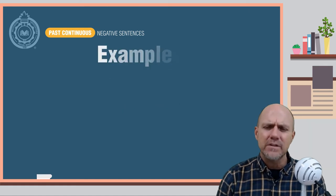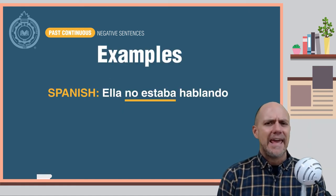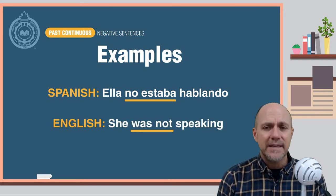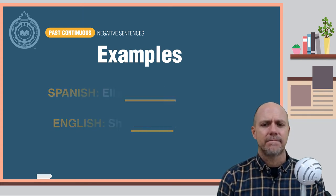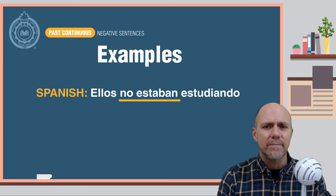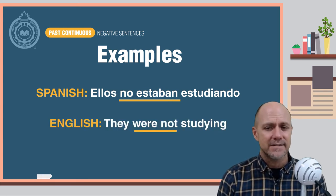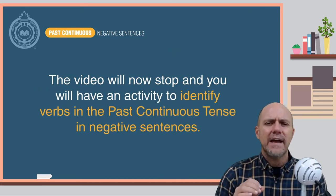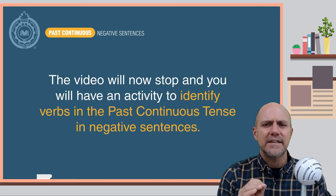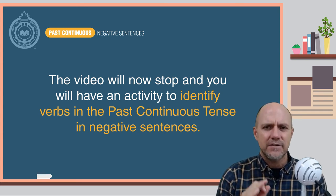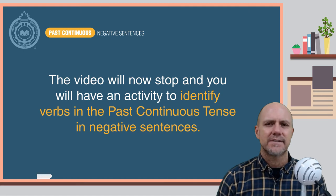Here are some examples. Ella no estaba hablando — She was not speaking. Ellos no estaban estudiando — They were not studying. The video will now stop and you will have an activity to identify verbs in the past continuous tense in negative sentences.